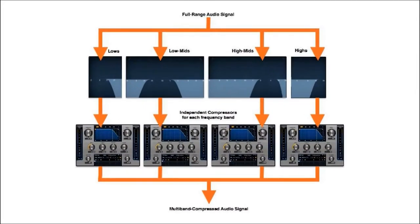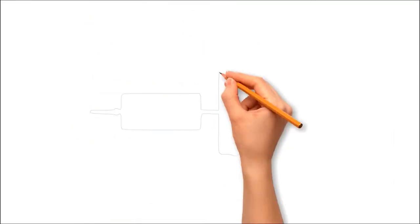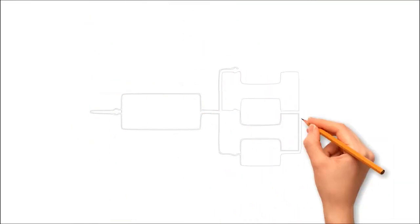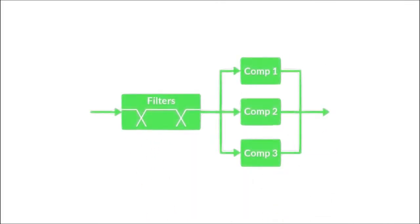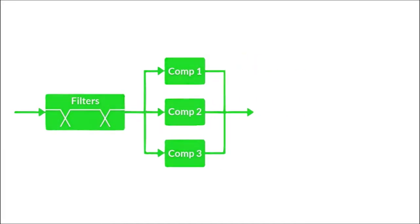Multi-band compression is a mixing process that divides the frequency spectrum into distinct frequency bands using a dynamic processor. Each band has its own set of compression parameters. Multi-band compressors provide greater accuracy and control over various aspects in a mix. The outputs are frequently more transparent than a normal single-band compressor.